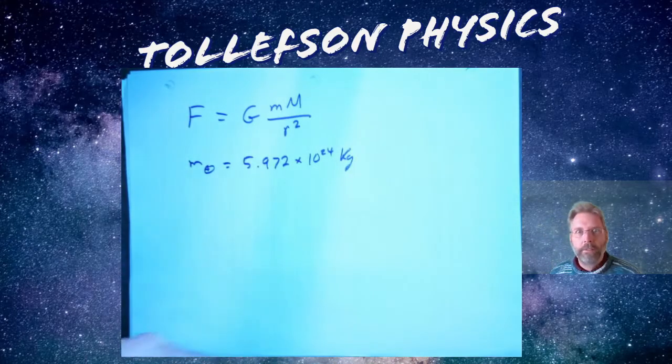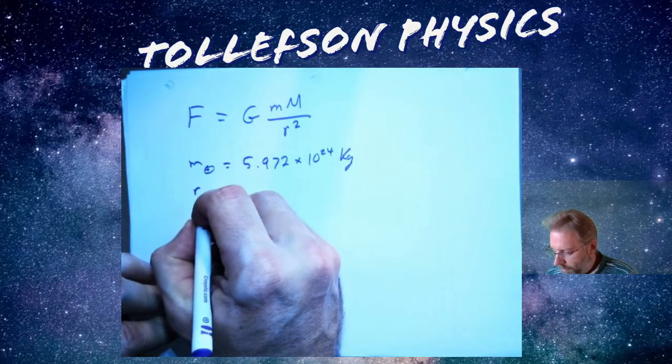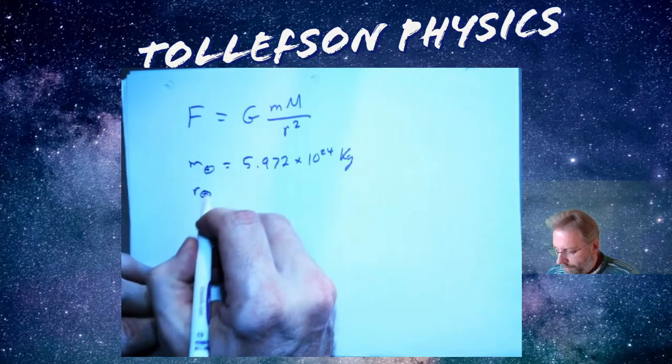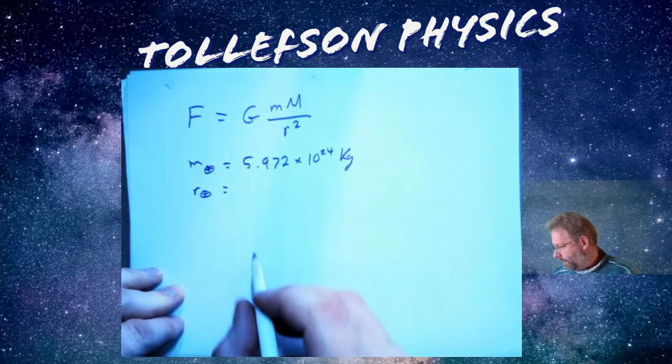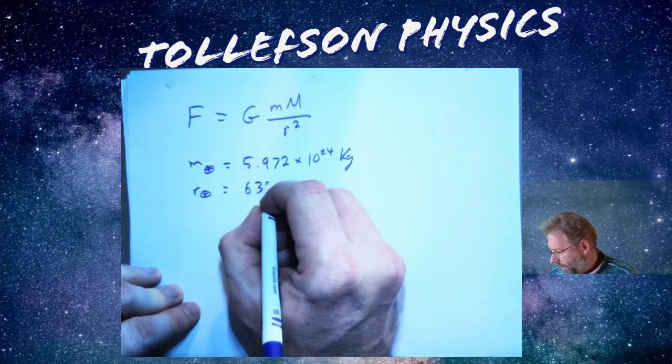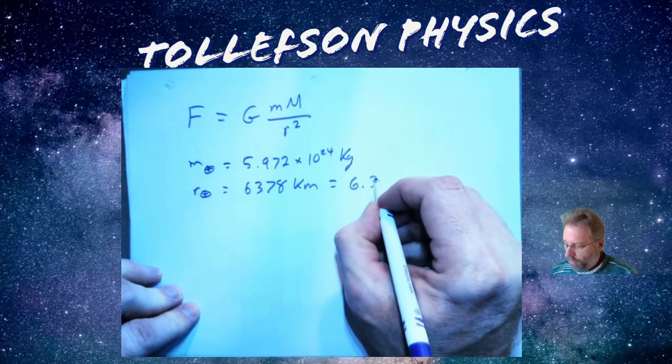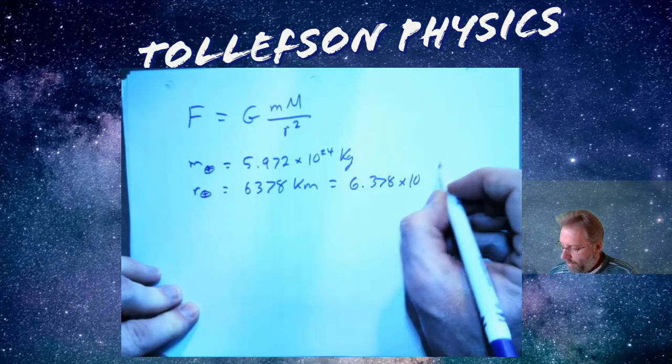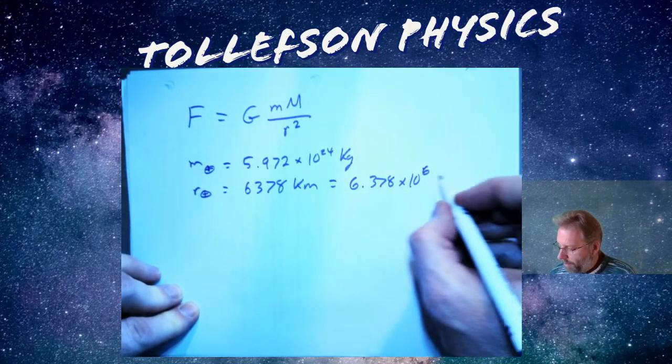The distance to the middle of the Earth - that little symbol here, that's a symbol for Earth - the distance to the middle of the Earth is 6378 kilometers, which is the same as 6.378 times 10 to the sixth meters, because I moved that over and k means 3.